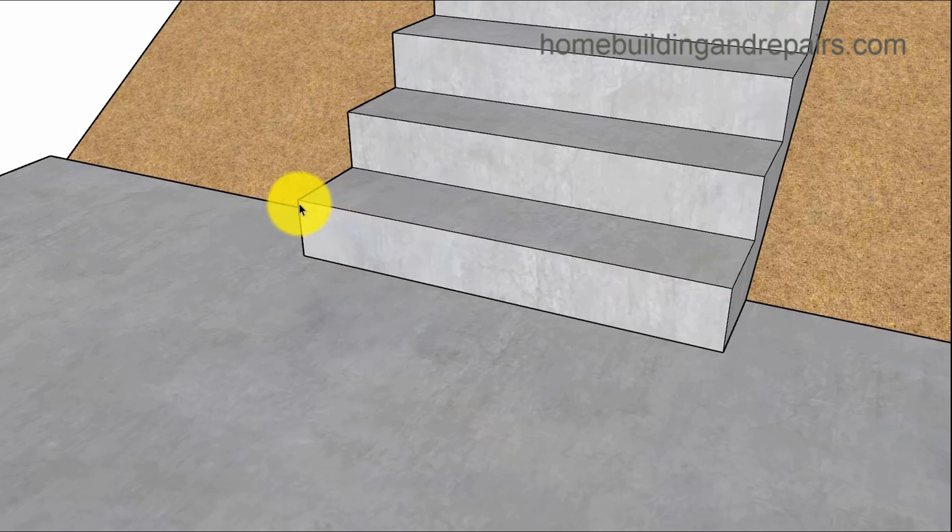Now, the stairs need to be level. The treads need to be horizontally level. But in some cases, like if you live in San Francisco, this could be a problem. So the stairs will need to be level, but the walkway is allowed to slope a maximum of 1 in 12 units.